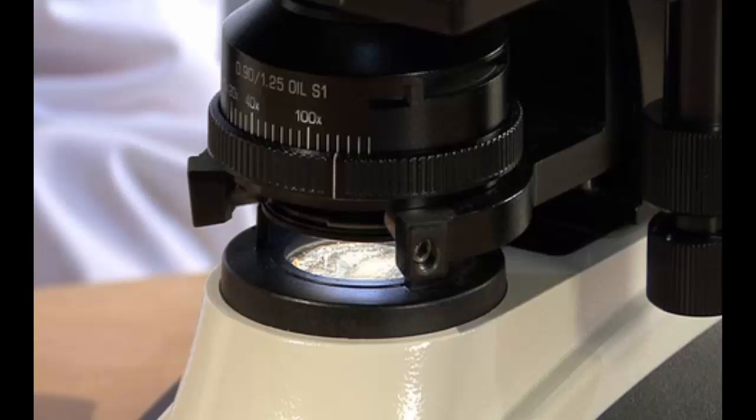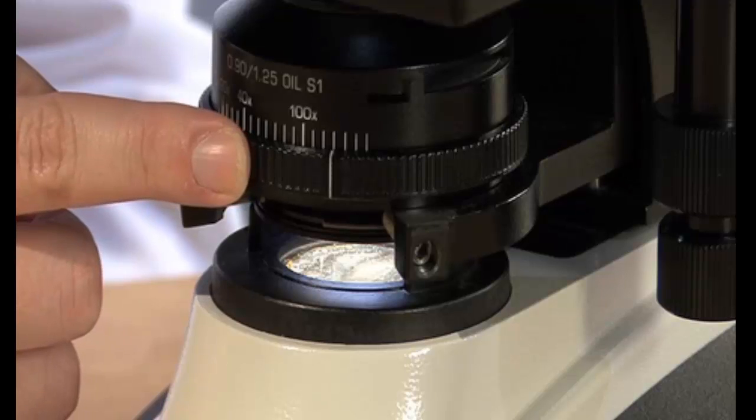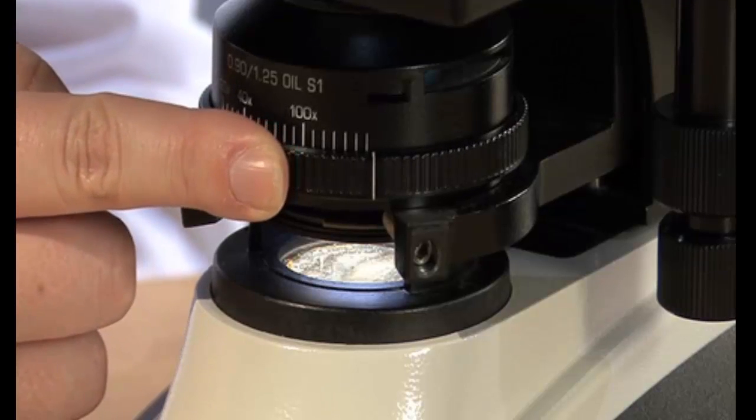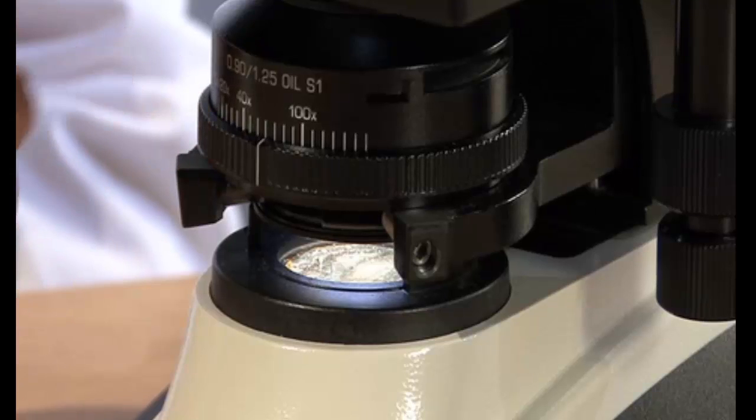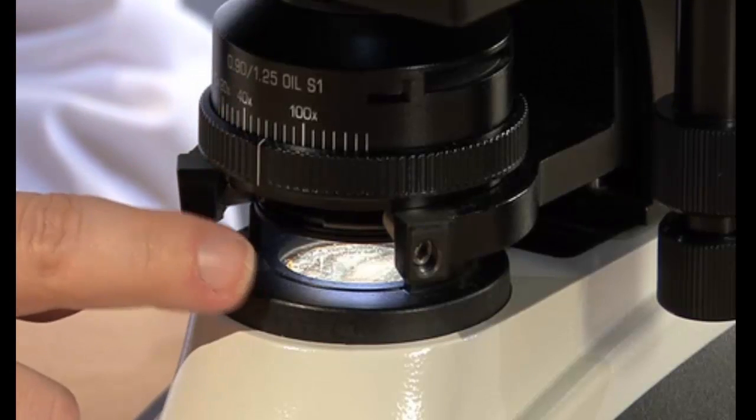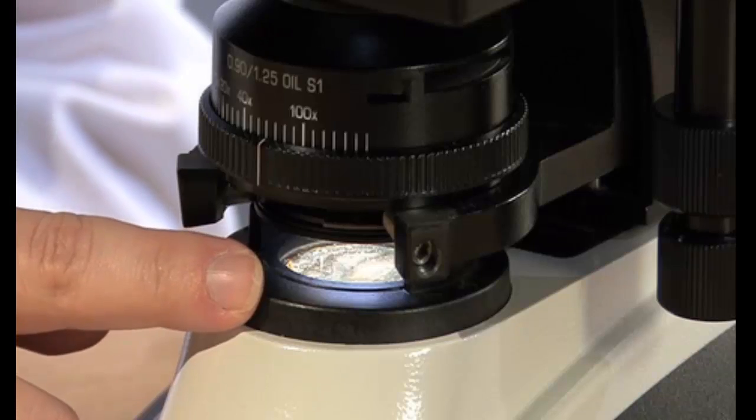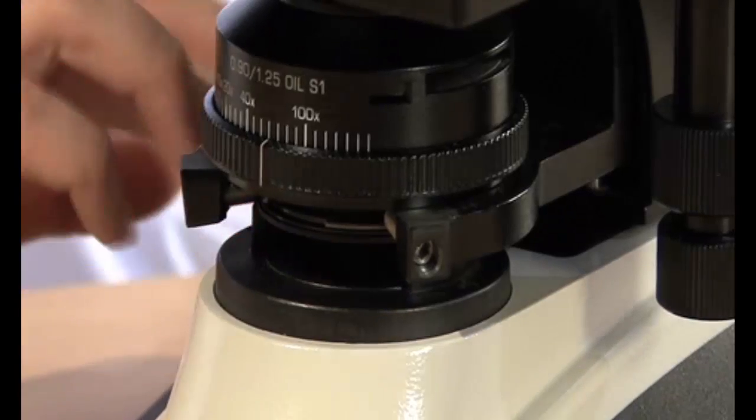Beneath the stage is the condenser which focuses the beam of light on the object. Below the condenser is the iris diaphragm, which controls the amount of light that passes through the stage and onto the specimen itself. At the very bottom is the actual light source and the on-off switch.